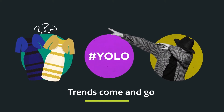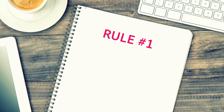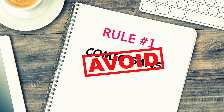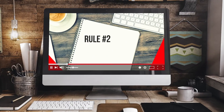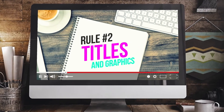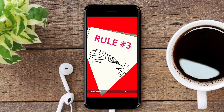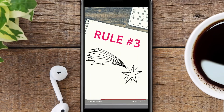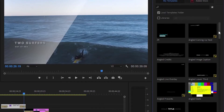Trends come and go, so it's worth sticking to a few simple rules when adding titles and graphics. Rule one: avoid Comic Sans — decide on a clean, clear font and use it across all your videos for a consistent feel. Rule two: make titles and graphics an extension of your brand by color coding everything. Rule three: keep crazy transitions to a minimum — no star wipes, please.